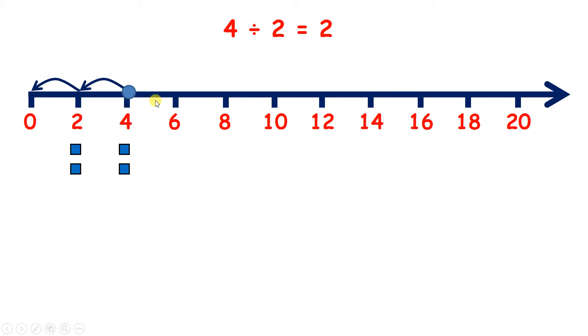4 divided by 2 is 2, because if I have 4, I can take away 2 two times to get to 0. 2 divided by 2 is 1. 0 divided by 2 is 0.